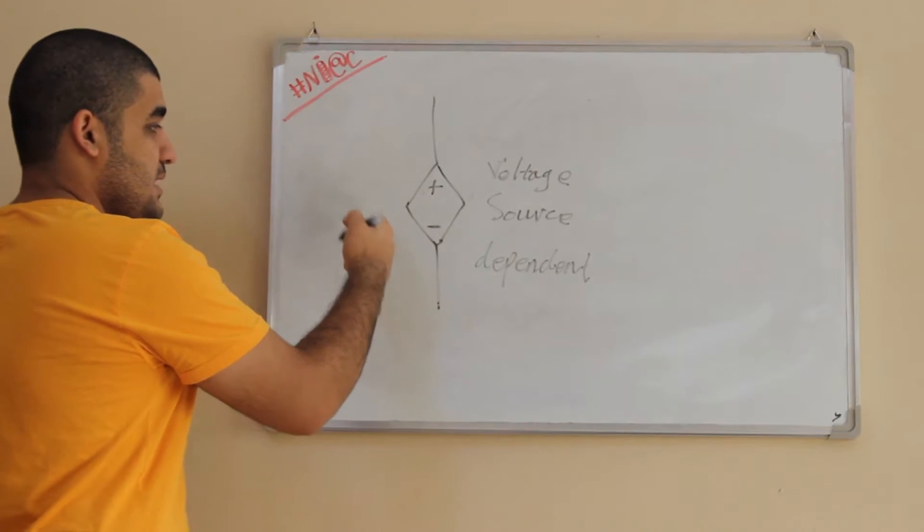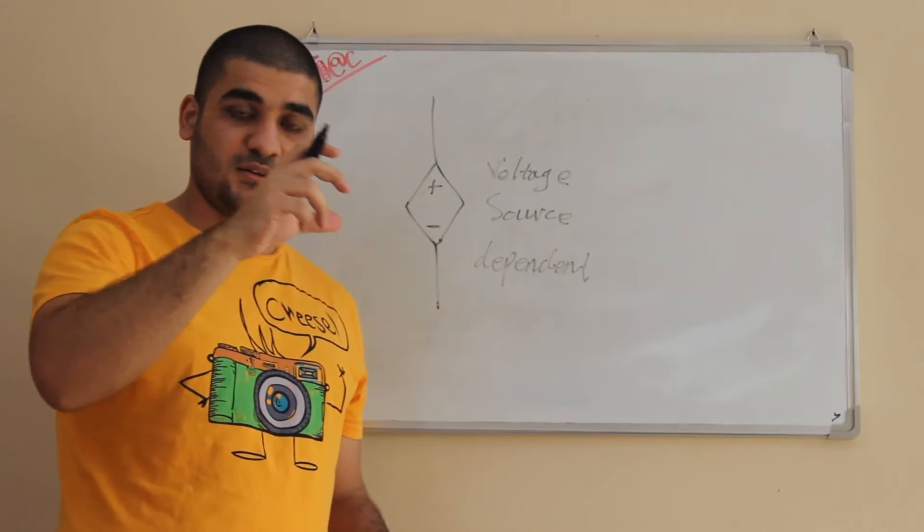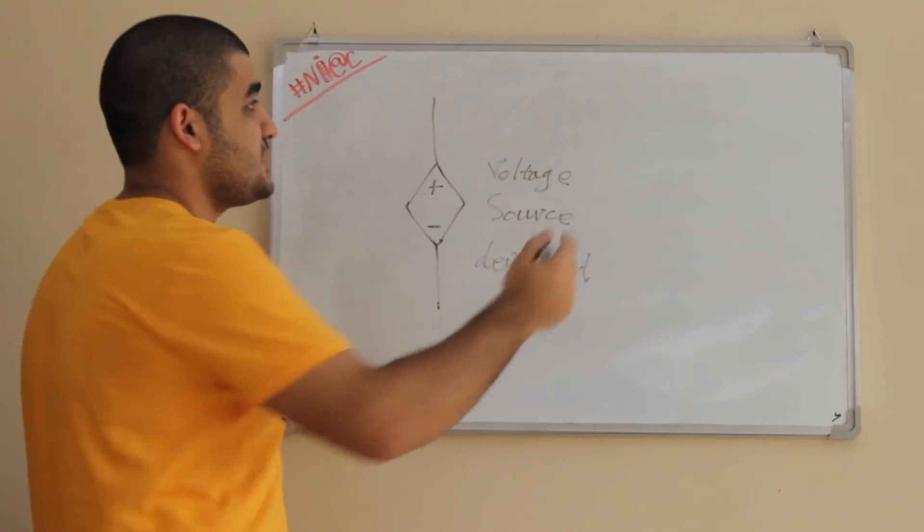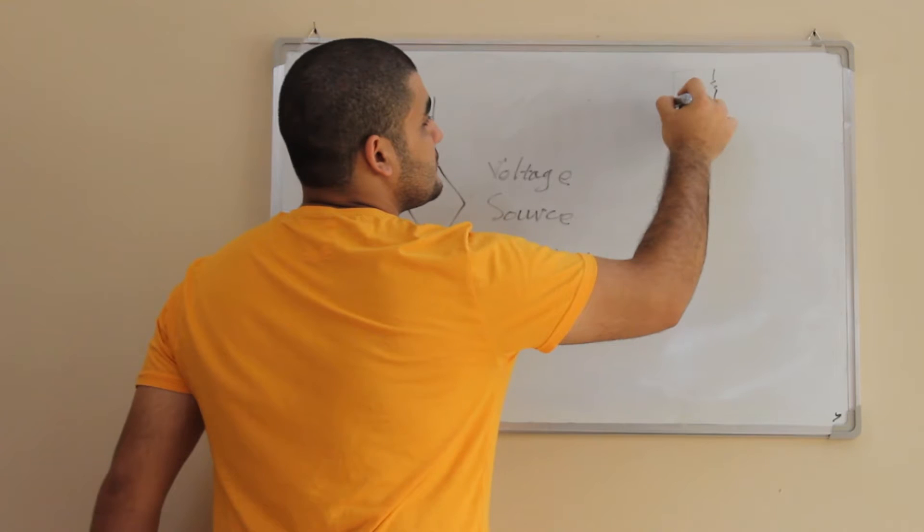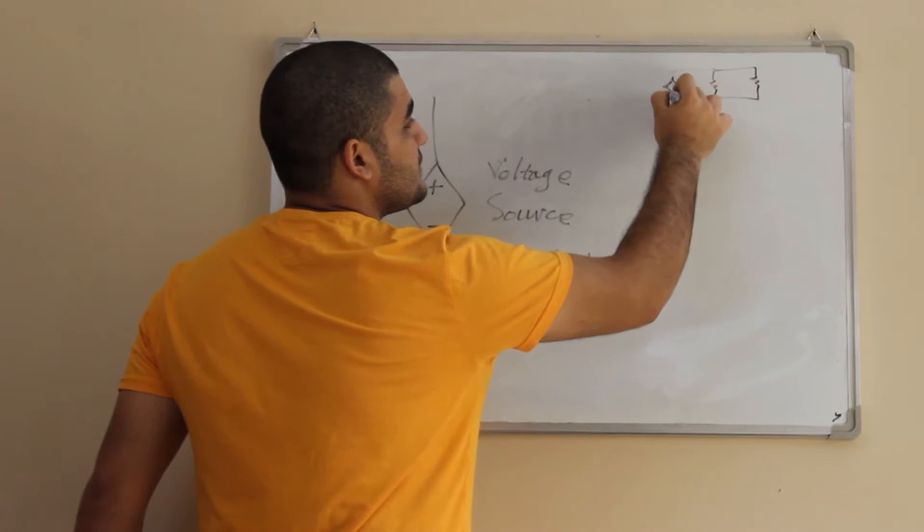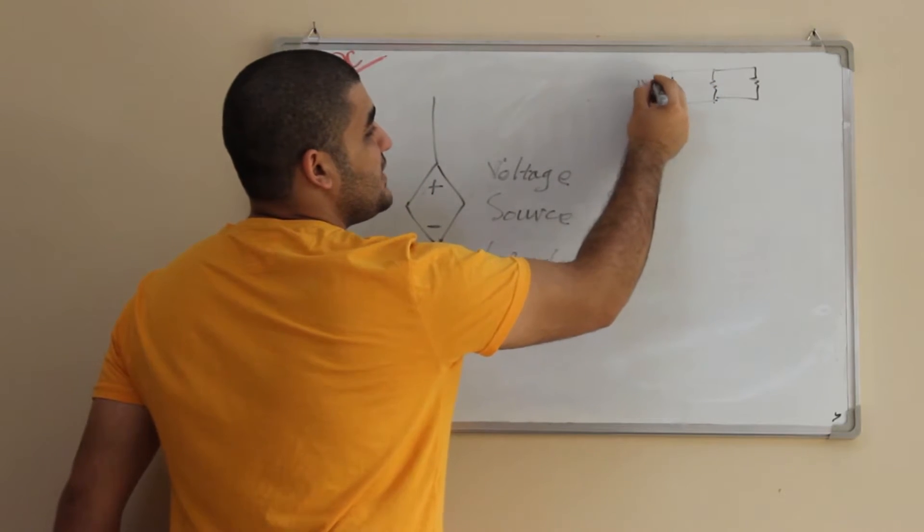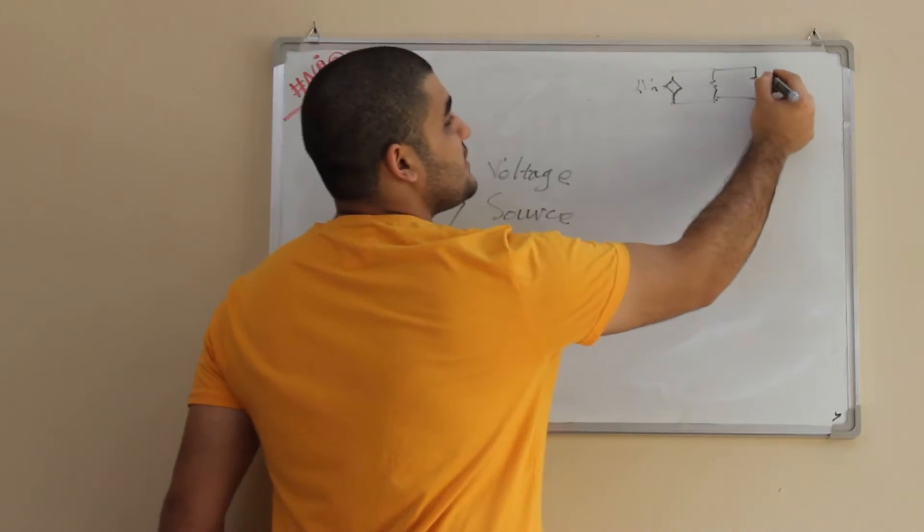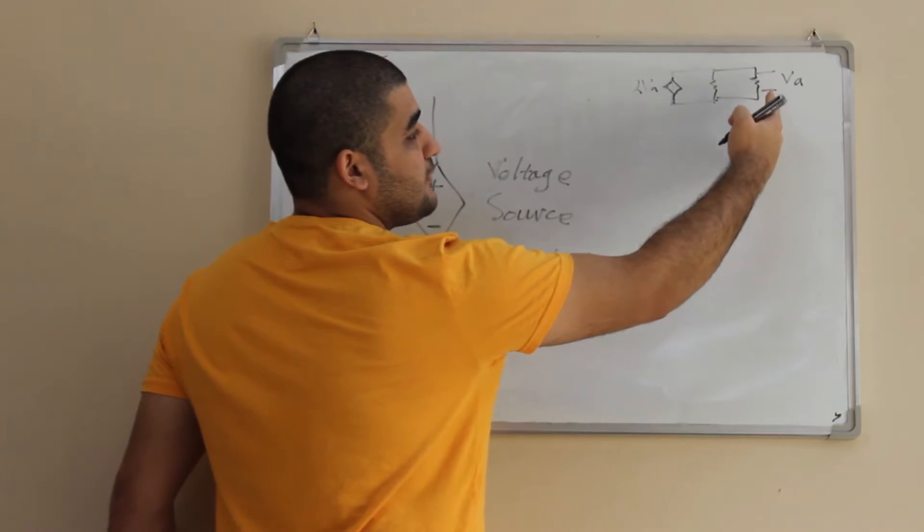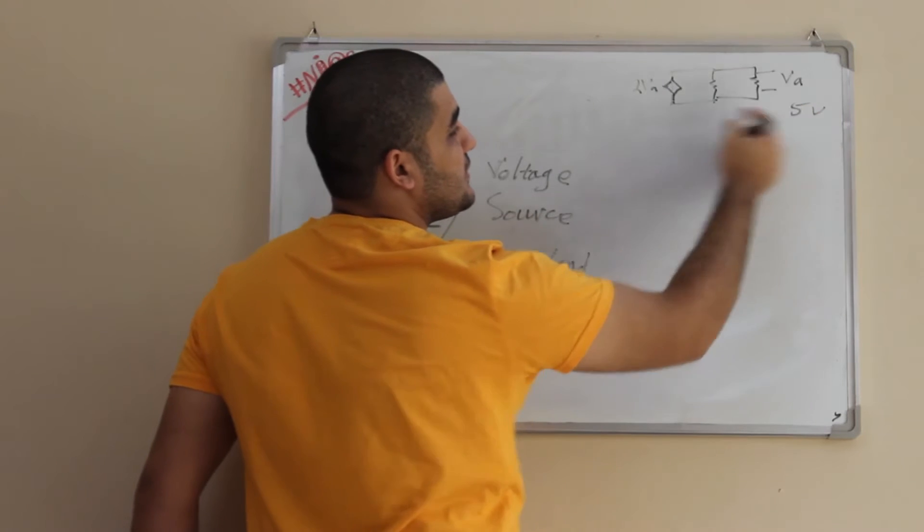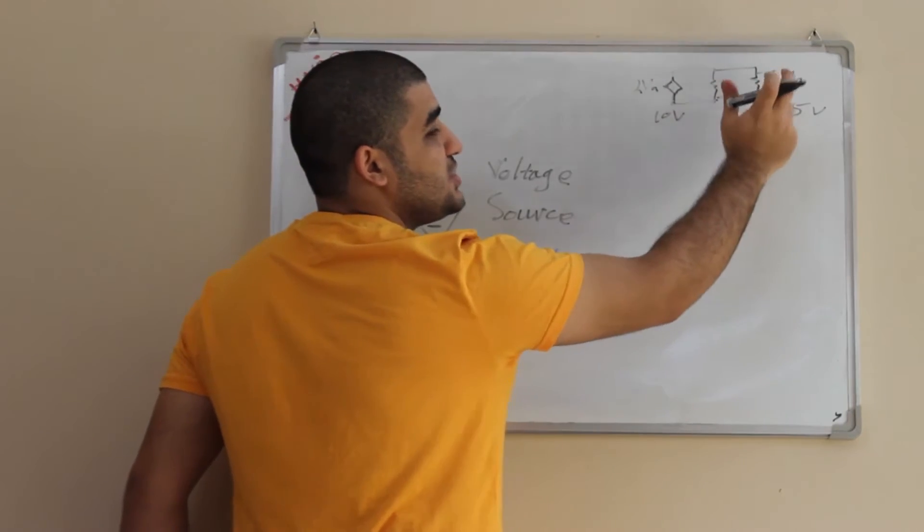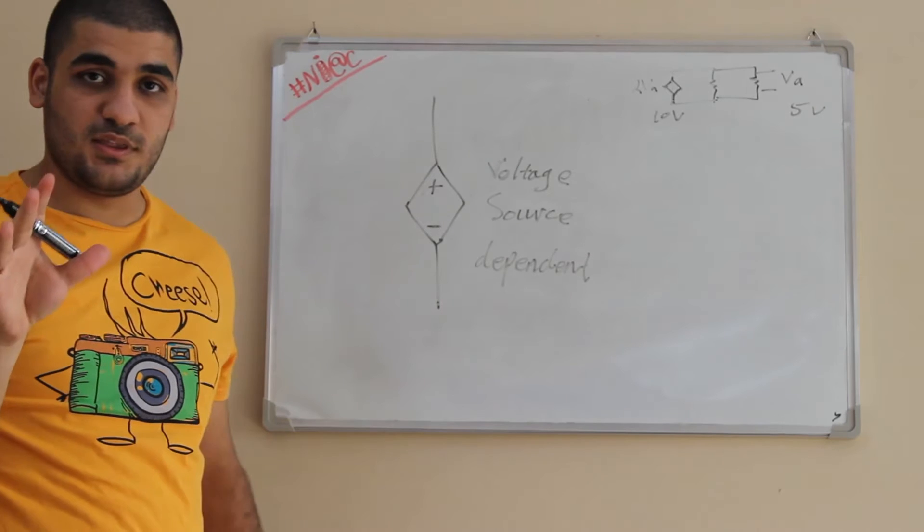This is depending on other voltage across a component in another place in the circuit. For example, I have this circuit, and here is my dependent source. Here is 2VA, and it's giving me that here is VA. So how much is the value of the voltage here? For example, 5V. The source here is 10V because this source is dependent on the voltage here. That's called dependent sources.